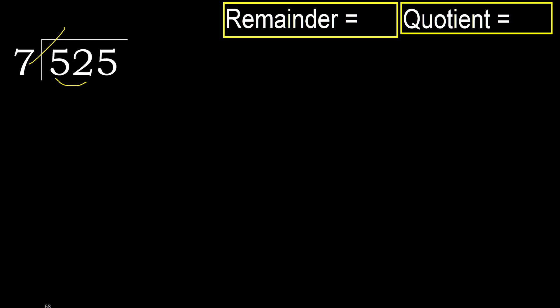But not greater. 7 multiplied by 8 — 56 is greater. 7 multiplied by 7 — 49 is not greater. Ok. 52 minus 49 equals 3. Next.